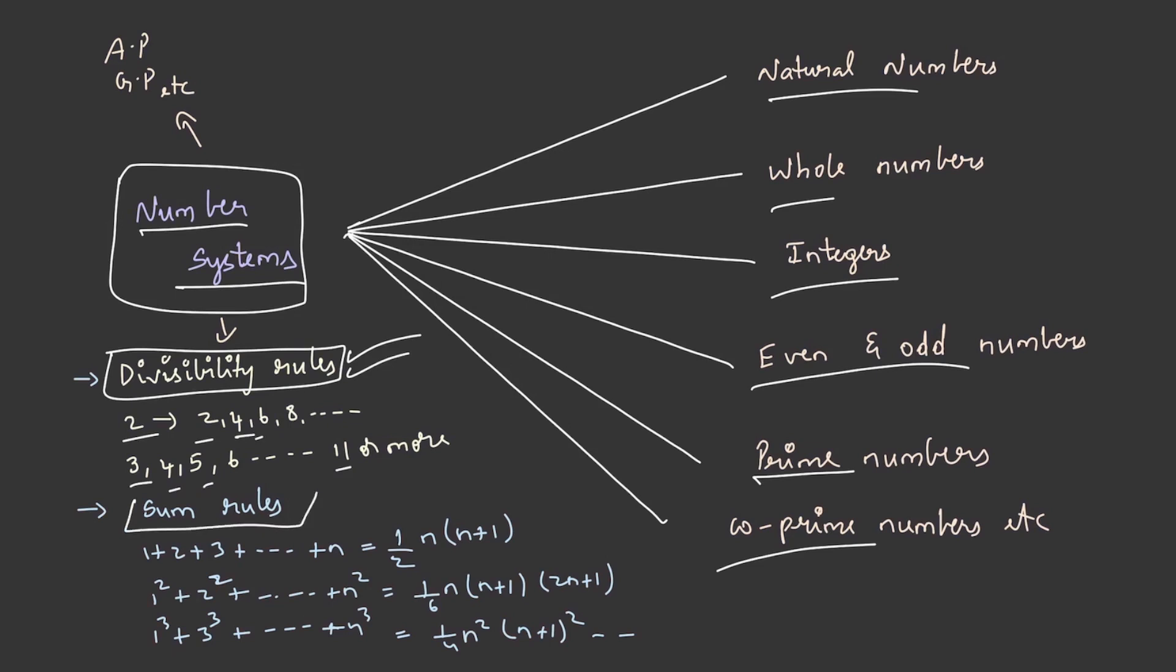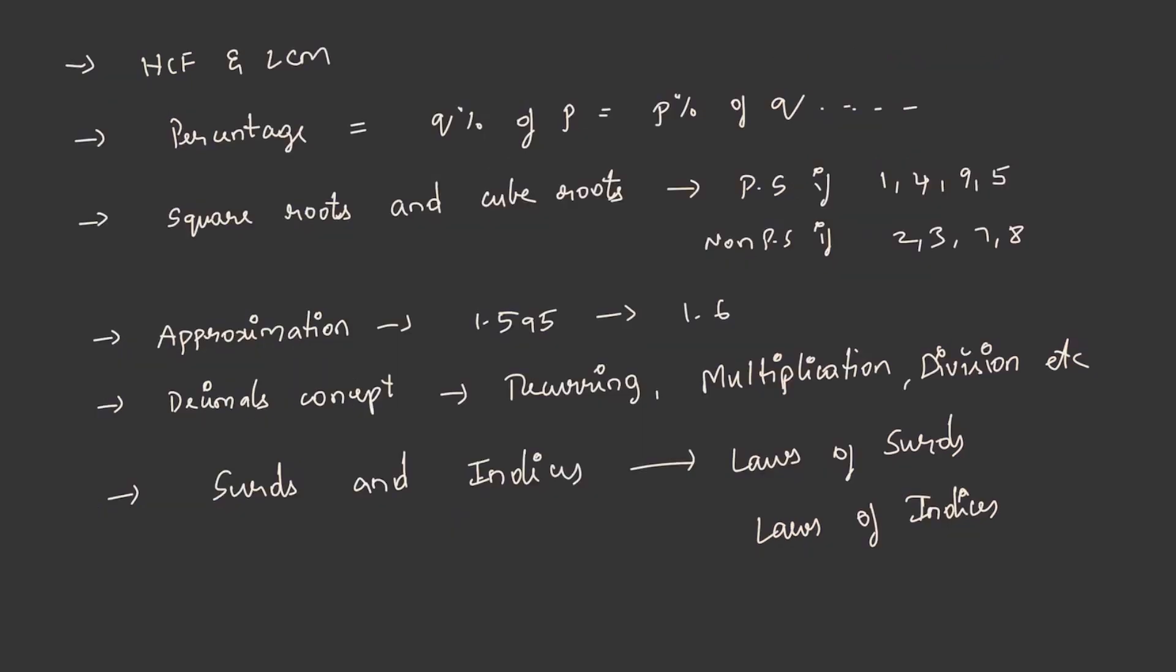And several other concepts such as sum rules, all these formulae, as well as arithmetic progression, geometric progression, etc. It adds an advantage if you learn the HCF and LCM concept, the percentage concept, which involves Q percent of P is equal to P percent of Q and many formulae like this. In addition to that, learn square roots and cube roots concept. For example, a number is said to be a perfect square if its units digit consists of 1, 4, 9, 5, and it is said to be a non-perfect square if its unit digit consists of 2, 3, 7, or 8.